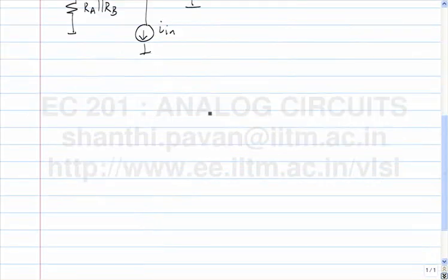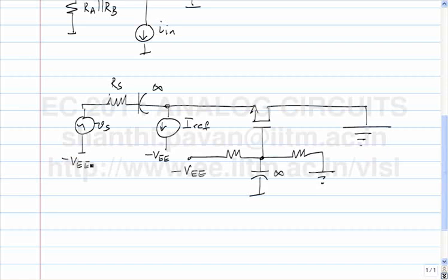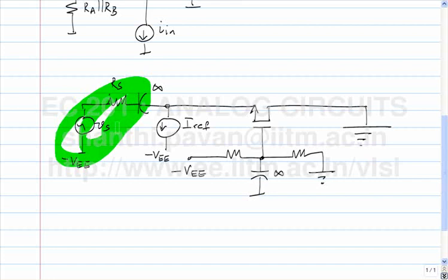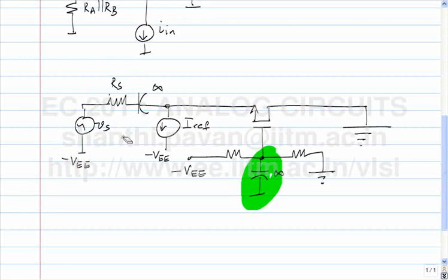Let us take a look at some simple variants of the common gate. If you remove part of the circuit, this is nothing but the common gate — the same thing we have seen except drawn differently. The reason it is drawn this way is that we are typically used to having the input on the left and the output on the right. In yesterday's diagram, the input came from below and the output was taken at the drain. This is just another way of drawing the same thing. There is also a variant where the supply goes from 0 to some negative value.